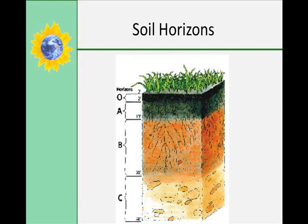Burrowing animals such as earthworms, insects, and rodents help circulate air and water through the soil and mix organic remains and minerals together. All of these processes may form a soil with distinct layers called soil horizons.